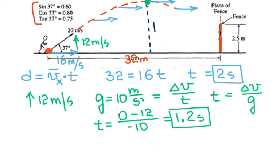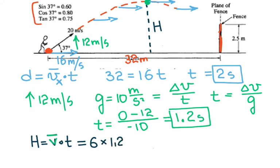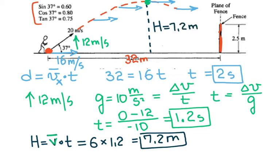If I call the maximum height h, I can calculate it as average vertical velocity times time. Initial vertical velocity is 12 m/s and final vertical velocity at the top is 0, so the average is 6 meters per second. Multiplying 6 m/s by 1.2 seconds gives 7.2 meters. So the highest point the ball reaches is 7.2 meters at 1.2 seconds, and it takes 2 seconds total to reach the fence.